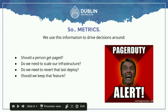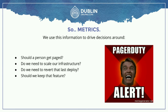And why are you gathering metrics in the first place? Well, they help you make decisions. There's all kinds of decisions that you'd make around data — like, should a person get paid? Is the app down due to certain service level metrics? Do we need to scale our infrastructure? Are we running too hot in terms of utilization across our fleet? Do we need to revert that last deploy? Are we starting to get 500 errors because there's a bad piece of code that we deployed? Or should we keep that feature? Are we not seeing a lot of requests for a particular API endpoint, and therefore maybe we should just deprecate it?